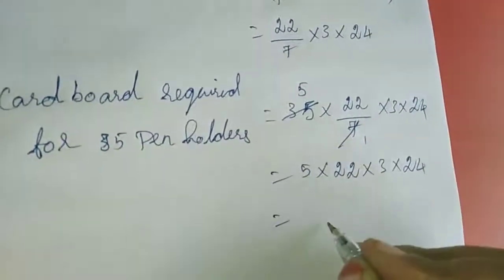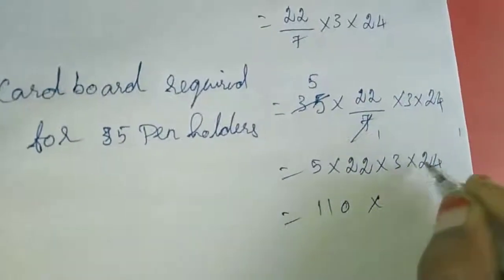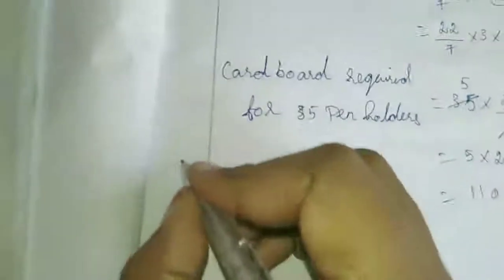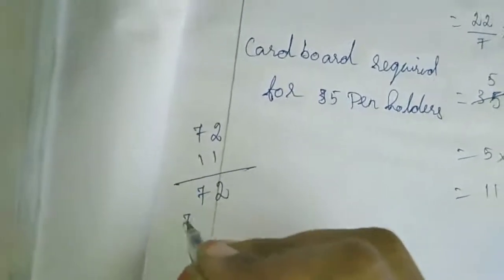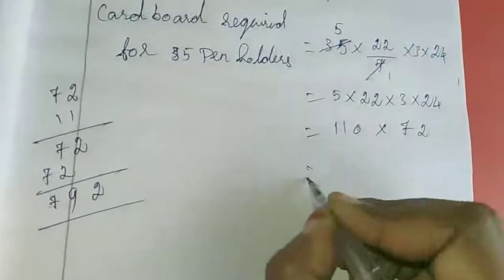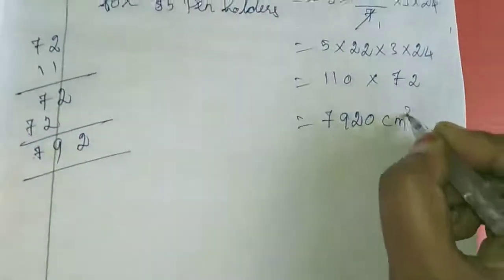5 into 22 equals 110. 110 into 3 is 330, carrying digits as needed. Then 72 into this gives 7920 cm squared.